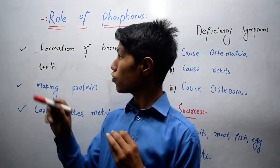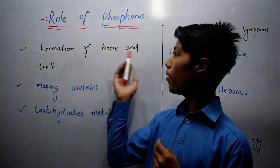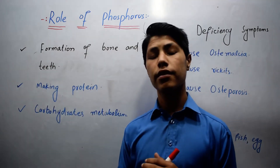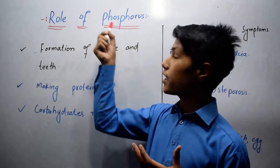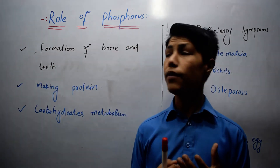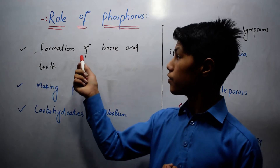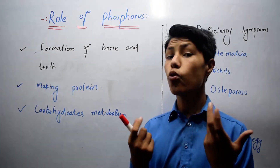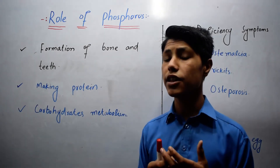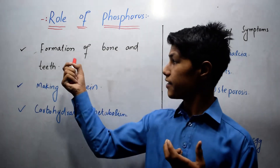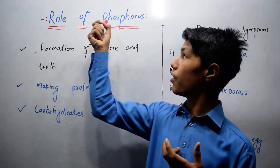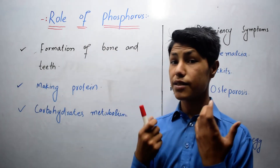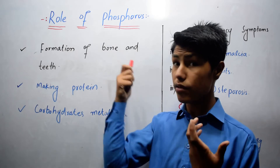The first role is formation of bone and teeth. Phosphorus helps to keep our bones and teeth very healthy. This is the function of phosphorus, which is basically a mineral.